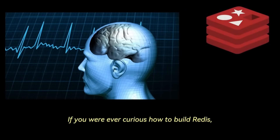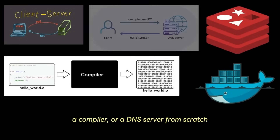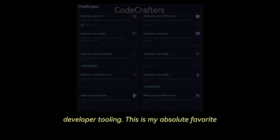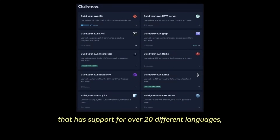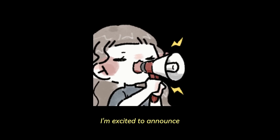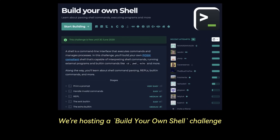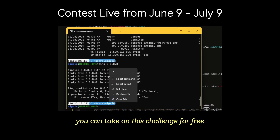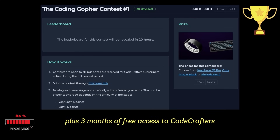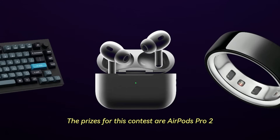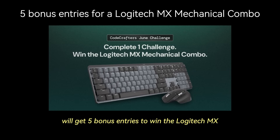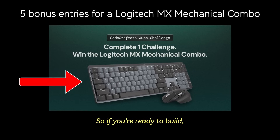If you were ever curious how to build Redis, Docker, an HTTP server, a compiler, or a DNS server from scratch, I'd highly recommend CodeCrafters, where you can learn to build these complex developer tools. It's my absolute favorite project-based learning platform with support for over 20 languages, including Go. Check the description for 40% off all subscriptions. This June, we're hosting a Build Your Own Shell Challenge with CodeCrafters — free for the entire month. We'll have a Coding Gopher community leaderboard, with prizes including AirPods Pro 2, an Aura Ring 4 Black, or a Keychron Q1 Pro, plus three months of free CodeCrafters access. Anyone who completes any CodeCrafters challenge in June also gets five bonus entries to win the Logitech MX Mechanical Combo giveaway.